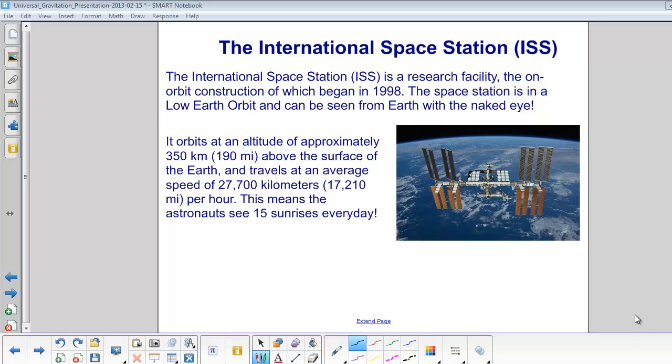I'm sure you've heard of the International Space Station, or ISS. The space station is in what we call low Earth orbit, so it can be seen from the surface of the Earth with the naked eye.